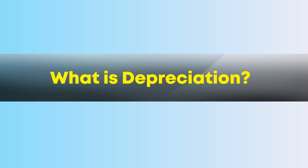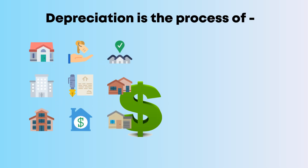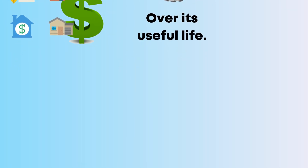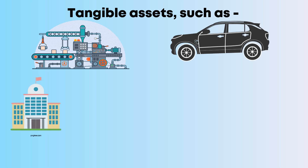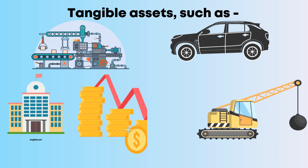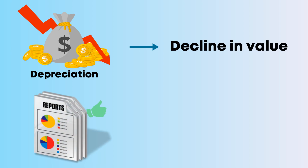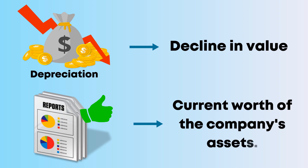So, what is depreciation? Depreciation is the process of allocating the cost of a tangible asset over its useful life. Tangible assets, such as machinery, vehicles, buildings, and equipment, lose value over time as they are used. Depreciation reflects this decline in value, ensuring that financial records accurately represent the current worth of the company's assets.